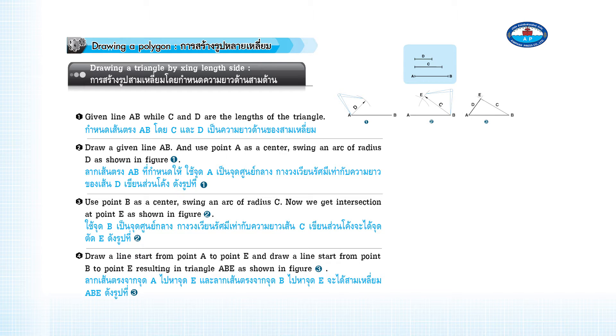Use point B as a center. Swing an arc of radius C. Now we get an intersection at point E as shown in Figure 2.